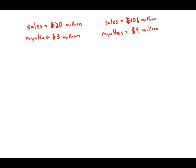A pharmaceutical company received $3 million in royalties on the first $20 million in sales of the generic equivalent of one of its products, and then $9 million in royalties on the next $108 million in sales.